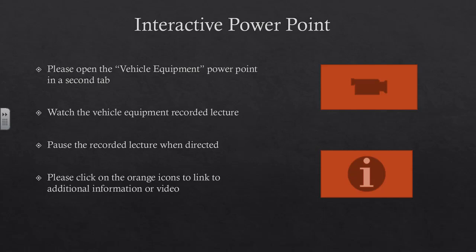In this particular lecture, we're going to use the interactive PowerPoint as well as this recorded lecture. Please open the vehicle equipment PowerPoint in a second tab, watch this recorded lecture, pause when directed, and click on the icons to go out to links to websites or documents. If you see an orange square, it will take you out to a video link or to a website for more information. Make sure you have the PowerPoint open and follow along as we go.